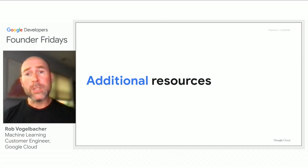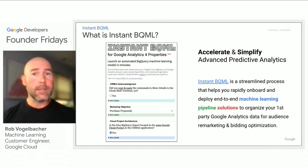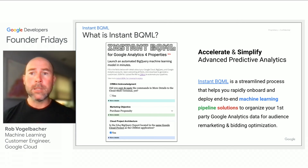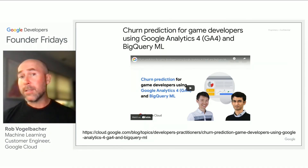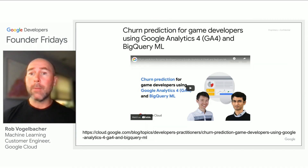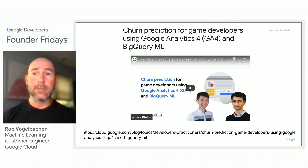We have a wide variety of additional resources to help you effectively use machine learning as part of your customer retention strategy. Instant BQML is an online resource you can use to build a series of standardized BQML models off of your Google Analytics data in just a few clicks, as well as helping you to automate that process using integration with open source CRM. We also have a full-blown example created by our developer advocacy team, which walks you through the process of developing a churn prediction model — in this case, an example targeted at game developers using Google Analytics and BQML.